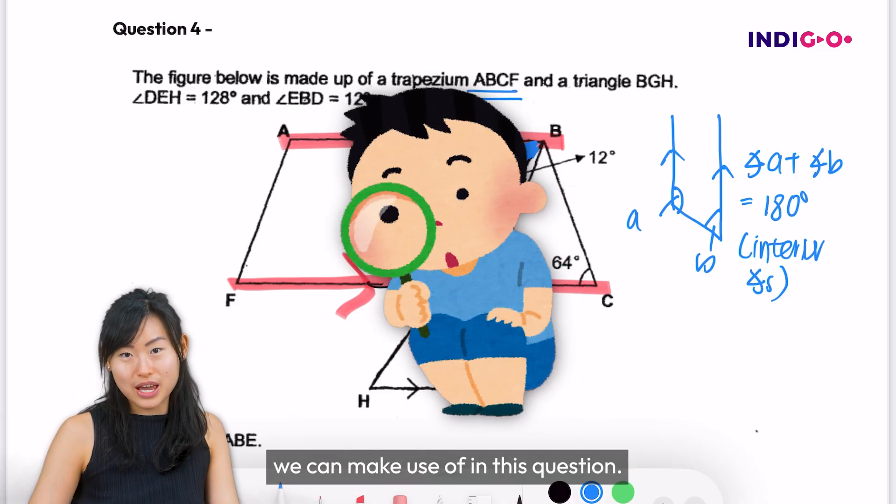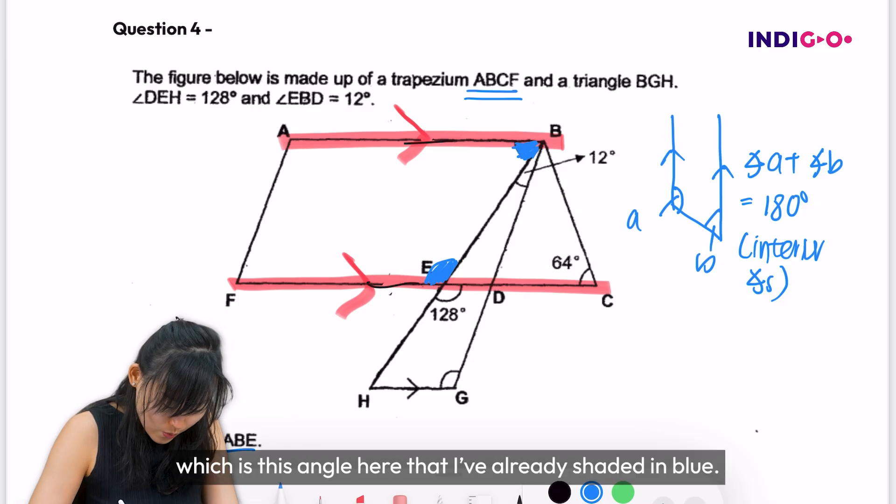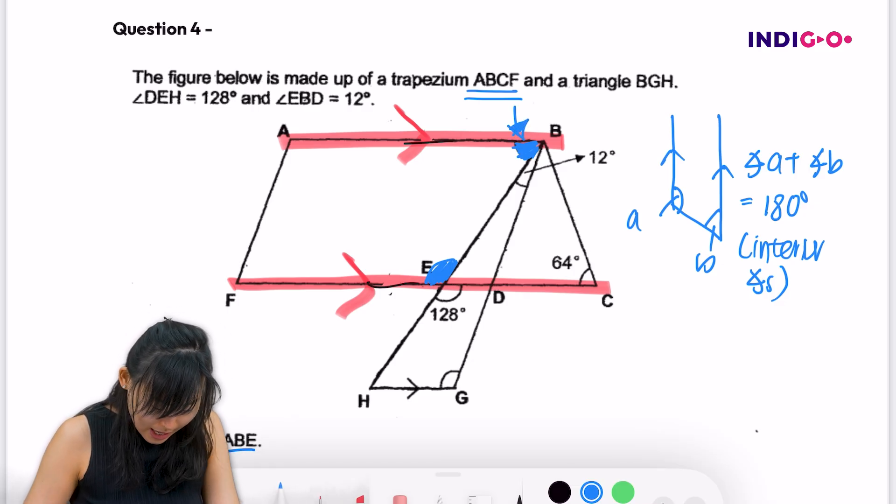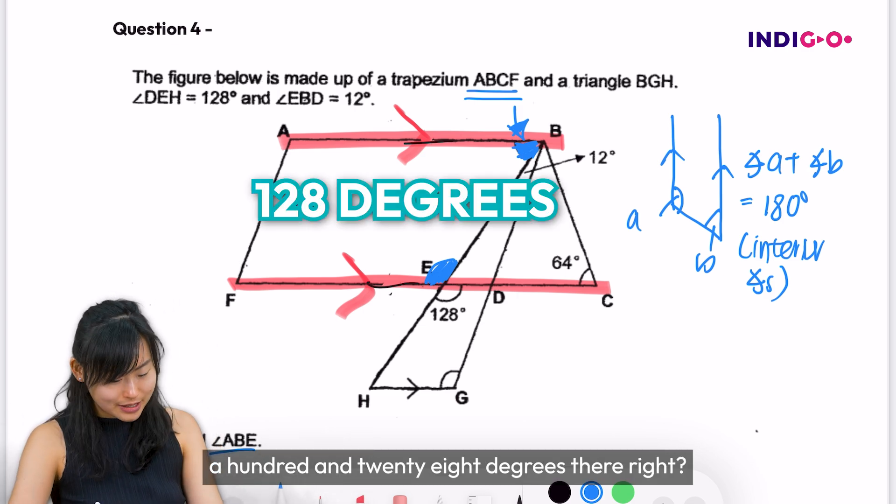And let's see what other information we can make use of in this question. I meant to find angle ABE, which is this angle here that I've already shaded in blue. And you see you've got the 128 degrees there, right?